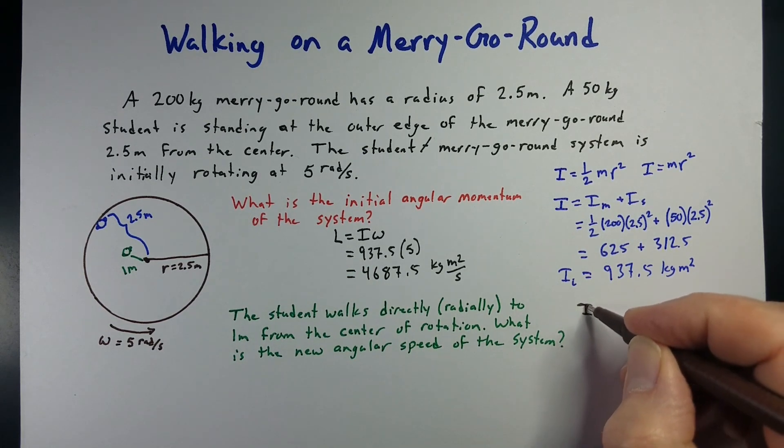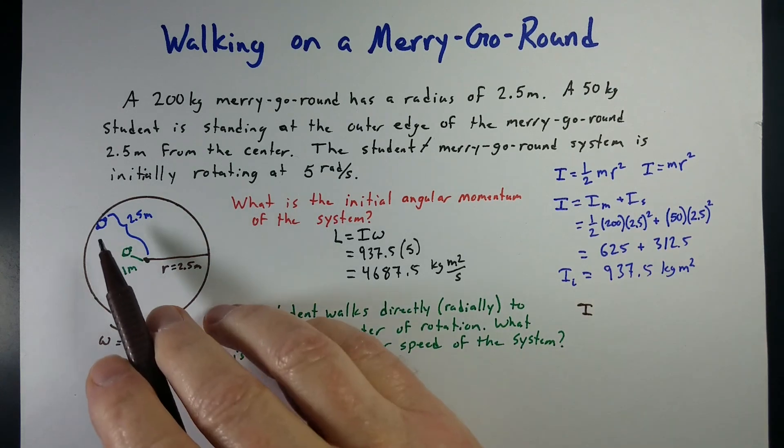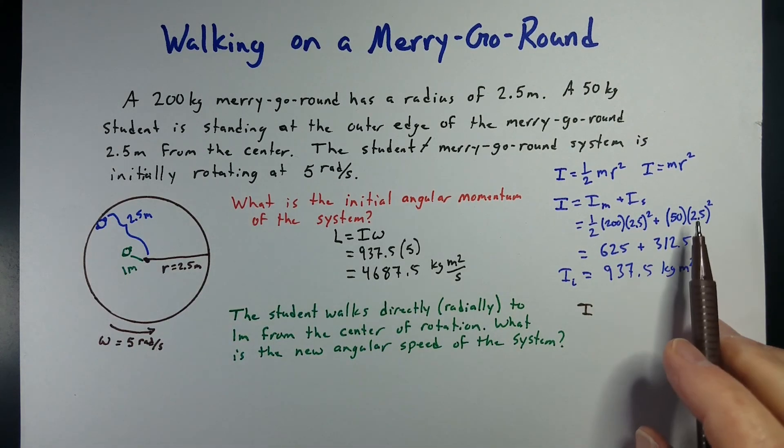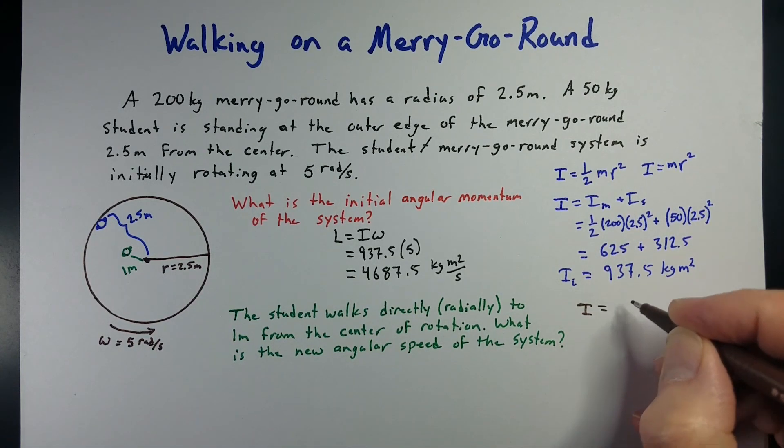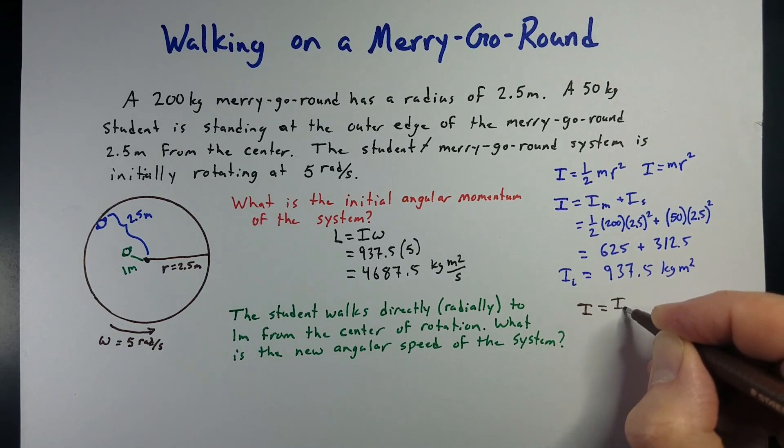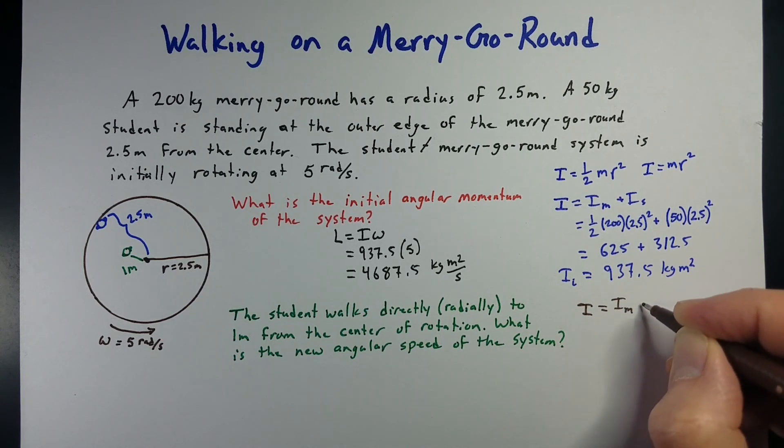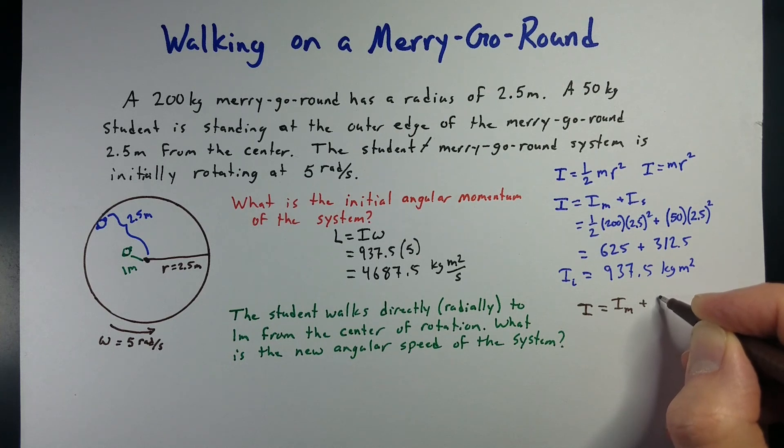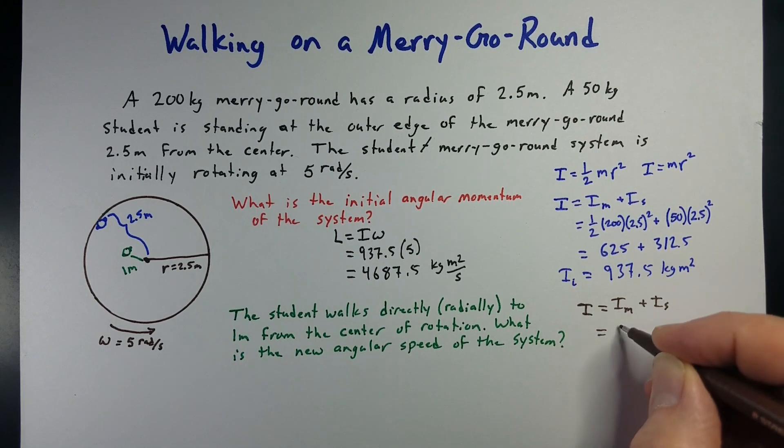We first need to figure out our new moment of inertia, because since the student moves in, they've changed their location. So, the moment of inertia of our merry-go-round, that's going to stay the same. That's fixed. But our moment of inertia for our student, that's going to change. So, this is still going to be 625.